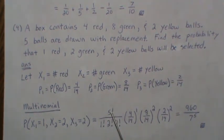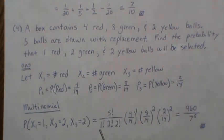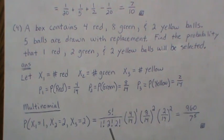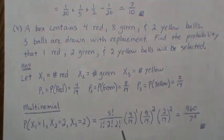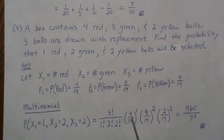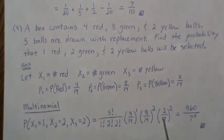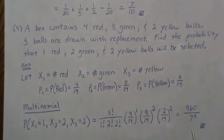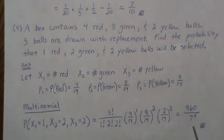The multinomial coefficient out front: we're drawing five balls with one red, two green, two yellow. Multiplied by the individual probabilities raised to their respective powers — one red, two green, and two yellow — and when simplified this becomes 960 over 7 raised to the fifth power.